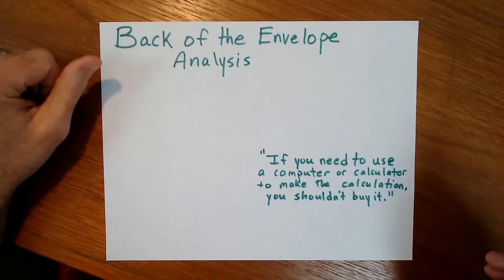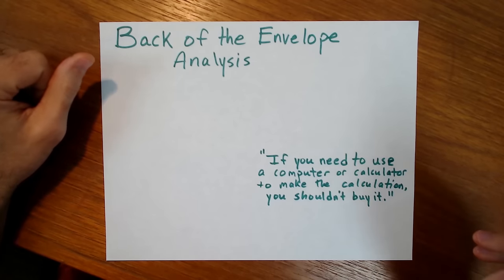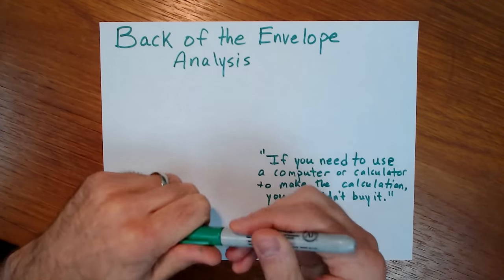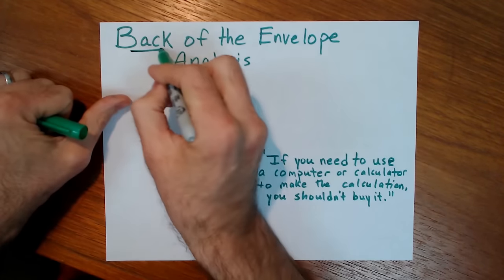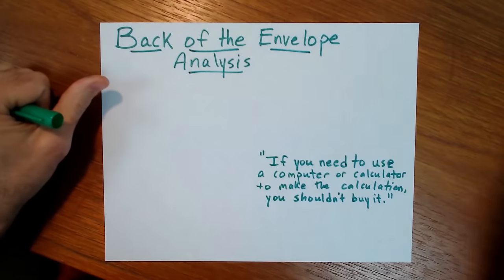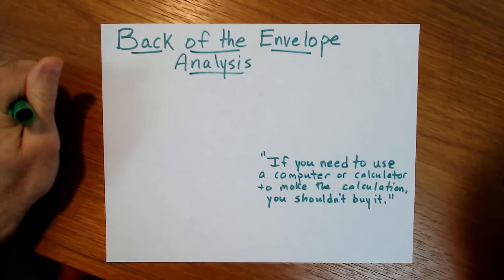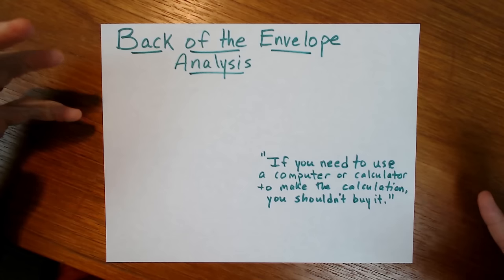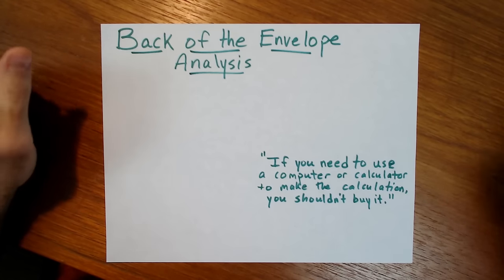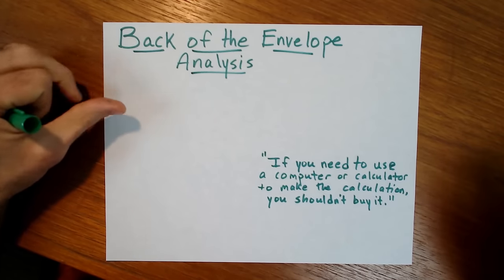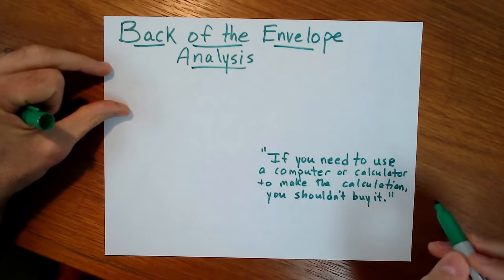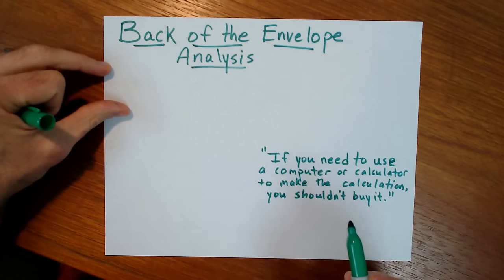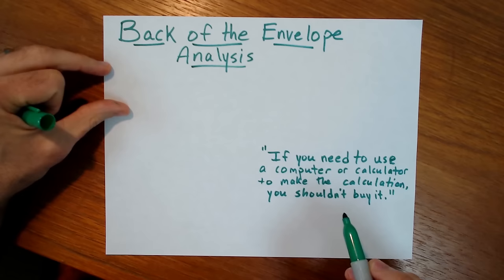I'm going to pull out a piece of paper and a pen and show you my back-of-the-envelope approach to analyzing a rental property. The approach I'm going to talk about today is called back-of-the-envelope analysis. I promised you we weren't going to be talking about fancy calculators or spreadsheets — there's nothing wrong with using those, and we can talk about those in other videos. But I heard a quote, and I want you to guess who this is by, that really impacted me pretty early on.